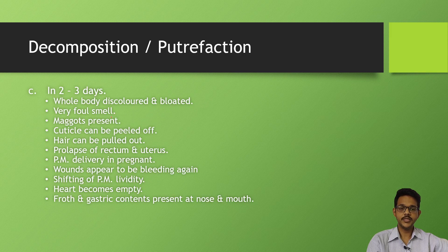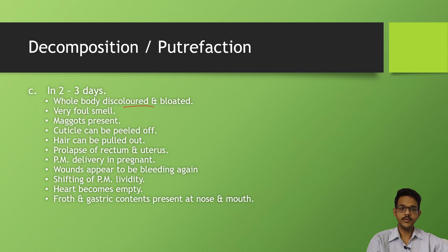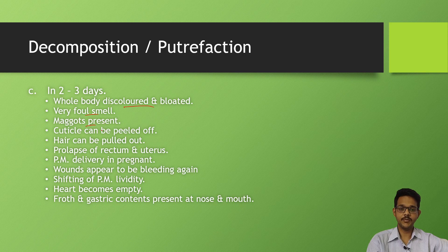In two to three days, whole body is bloated and discolored. There is foul smell, maggots start appearing (that is larvae of flies), cuticles can be peeled off, hairs can be pulled off, sometimes the rectum or uterus may prolapse. If the woman is pregnant, postmortem delivery may occur.